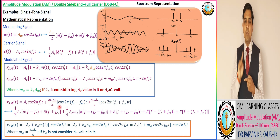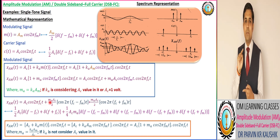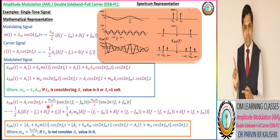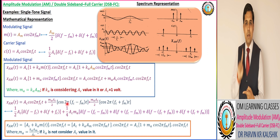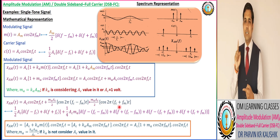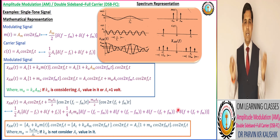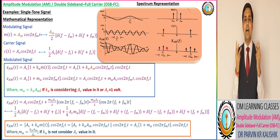Finally, we get the AM modulated wave, which equals Ac cos(2π fc t), corresponding to the carrier term, plus (Ma·Ac/2) cos(2π(fc + fm)t), corresponding to the lower sideband, plus (Ma·Ac/2) cos(2π(fc + fm)t), corresponding to the upper sideband of the AM wave. So in the AM wave, we have the upper sideband, lower sideband, and carrier — three terms in total.